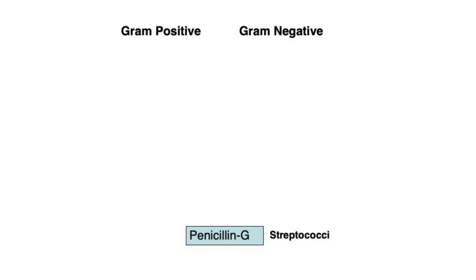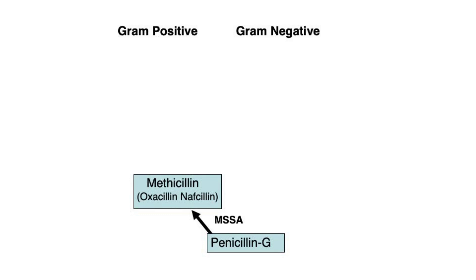Penicillin G was the first penicillin to be discovered, and today this antibiotic is primarily used to treat syphilis. It also effectively covers streptococci and anaerobic mouth flora. Because staph aureus quickly became resistant to penicillin, nafcillin and oxacillin were developed. These agents cannot be broken down by staph's beta-lactamase, and they effectively treat methicillin-sensitive staph, abbreviated MSSA.